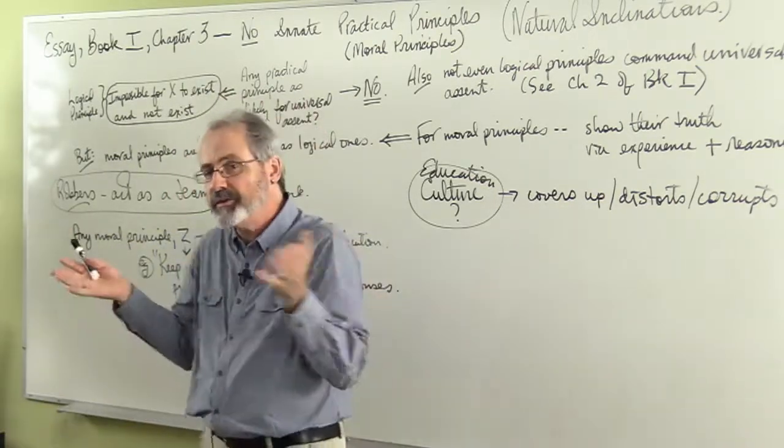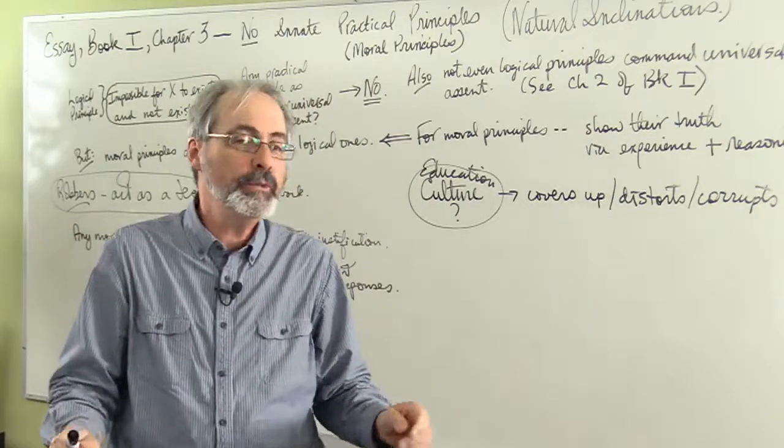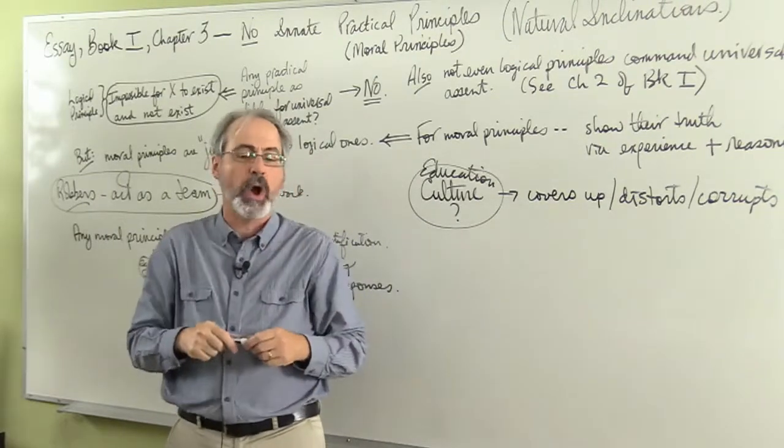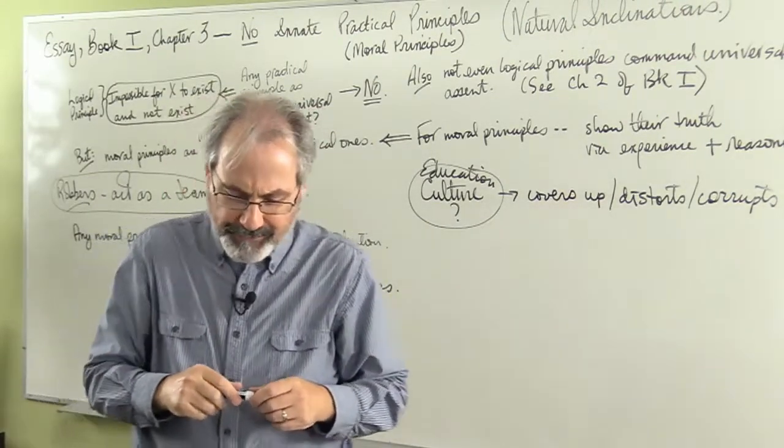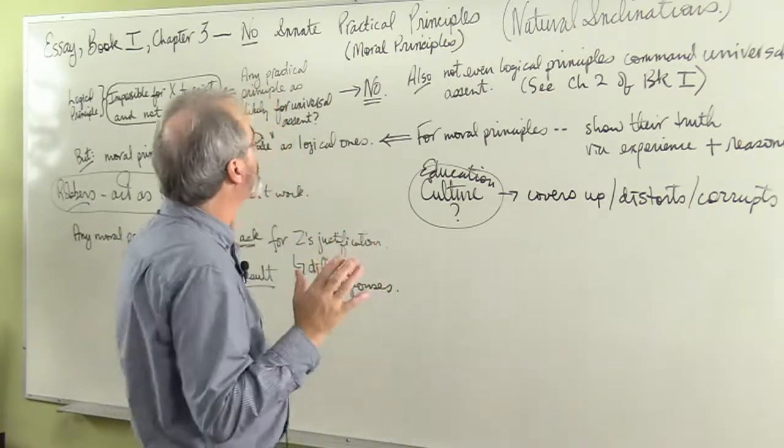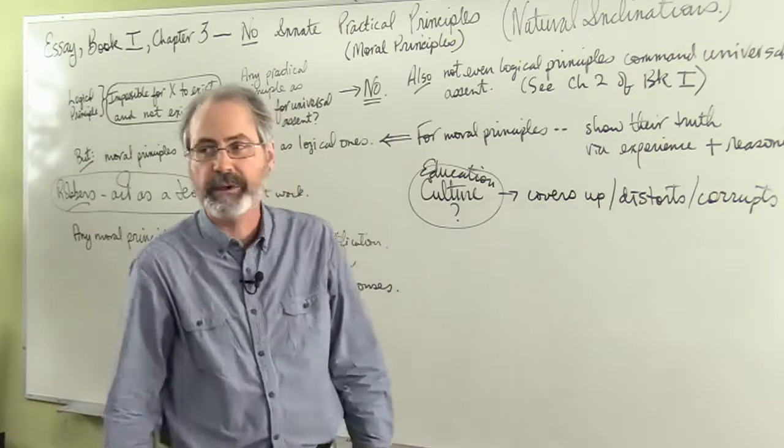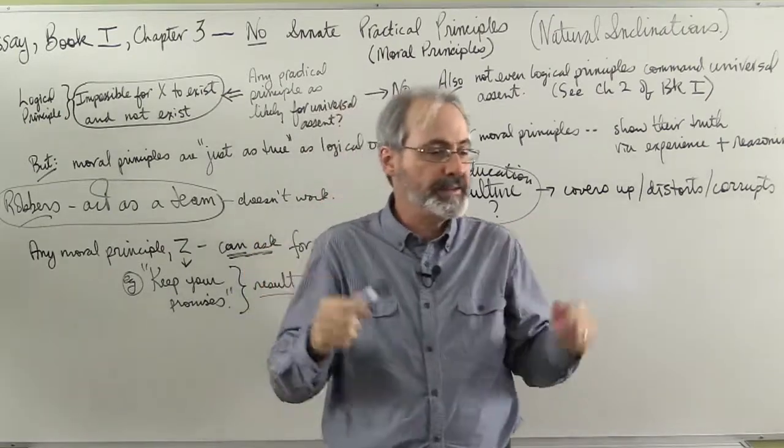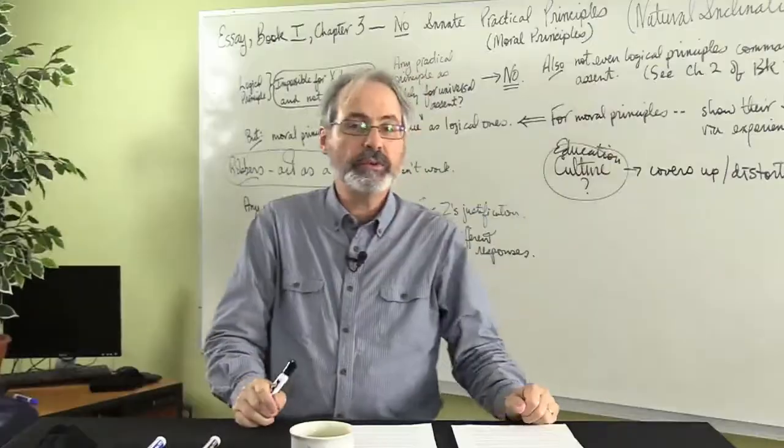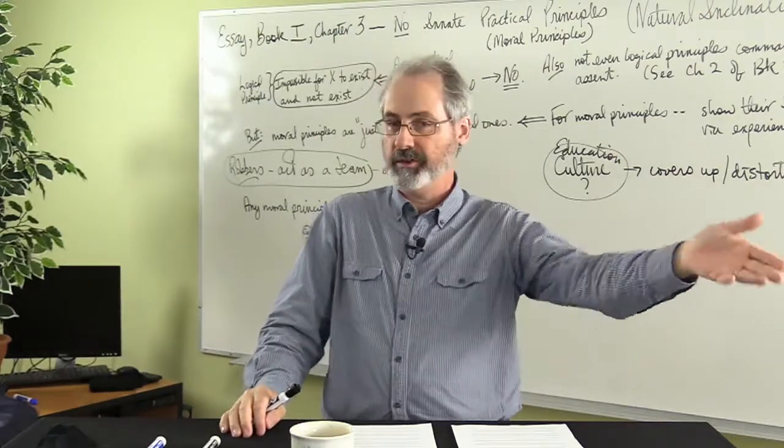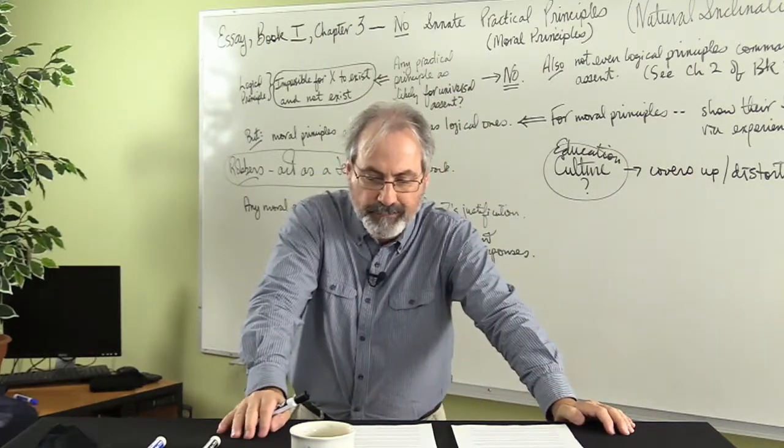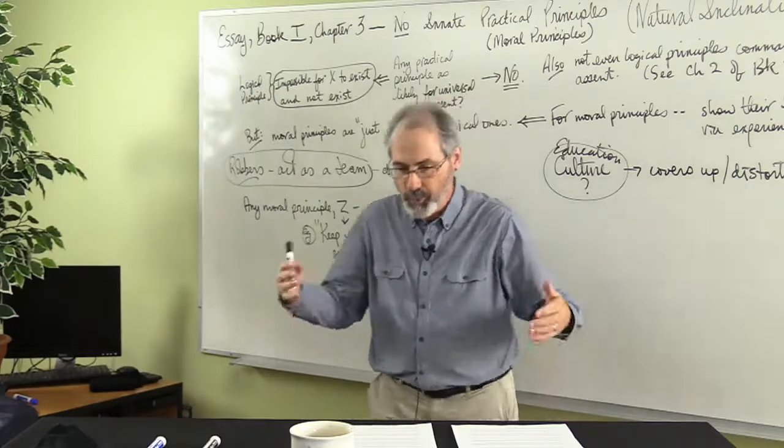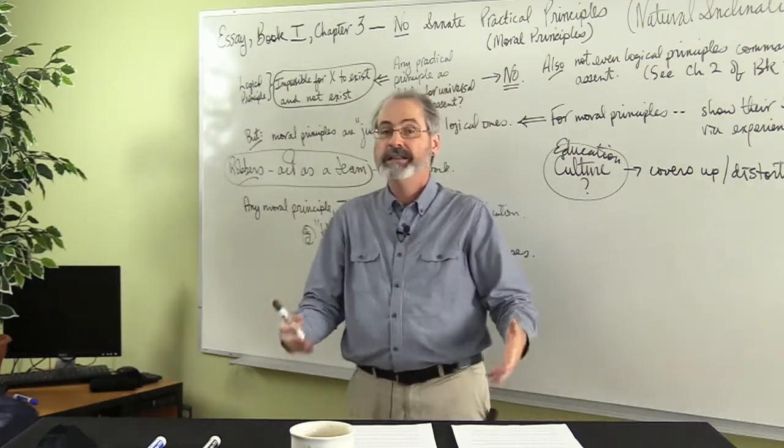So Locke then turns from a negative, shall we say, to a positive. Why do we believe a lot in innate propositions? Or why do we have such strong beliefs? Locke says, look, there's all kinds of moral principles that we believe in. We believe them tenaciously. We grab onto them, we hang onto them, and we don't like giving them up. Why is that? Well, here Locke shifts to a little bit of what we would today call sociology. And he says something like this. Well, think about it. How were you raised as a child? How are most children raised?